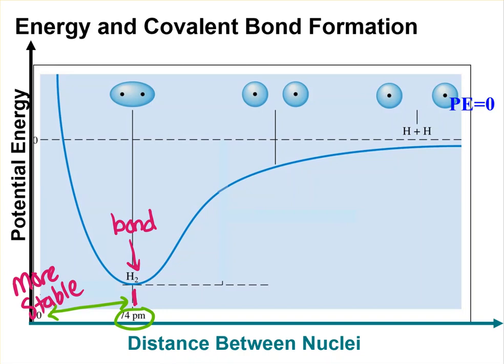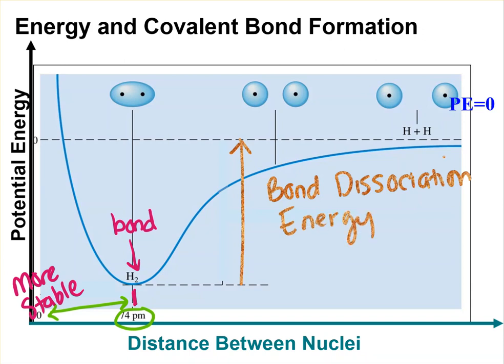So this ideal distance where they're most stable gives you the bond length. And then there's another thing that we can do, and that is look at the difference in energy between the bond energy here and when they're totally separate. And this amount of energy is the bond dissociation energy. It is the amount of energy required to break that bond.